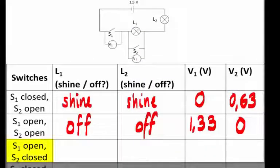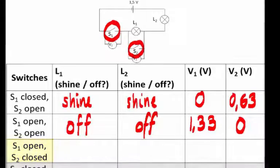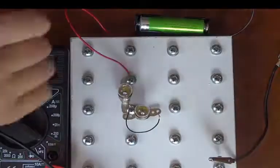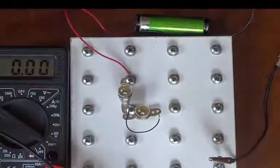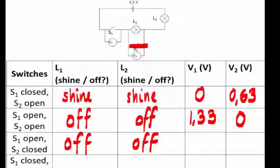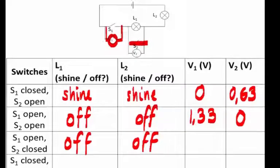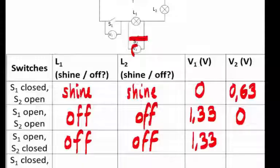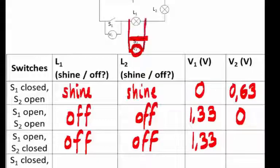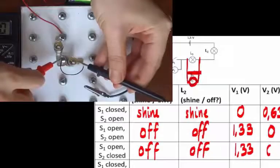Next circuit. Again, switch 1 must be open, but now switch 2 must be closed. There, switch 2 is closed. Unsurprisingly, the two bulbs do not shine. It's a broken circuit, so they can't shine. Both of them are off. We measure V1 across the open switch: 1.33 volts, and now V2 across that closed S2 switch, which is also across L1, and we get 0 volt.